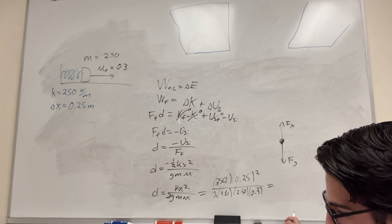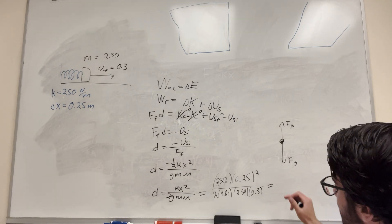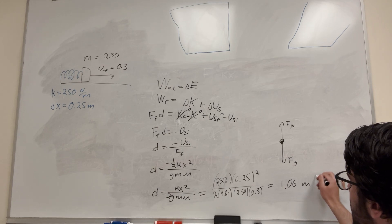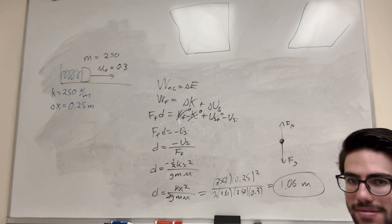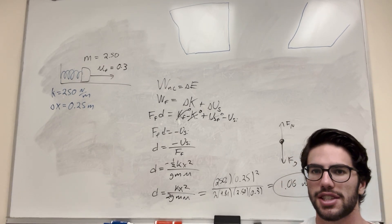And then I'm gonna make sure I did all that. Yeah, I did do that. 2 times 0.3, yep. And then this gives you 1.06 meters, which is a pretty reasonable number. So there you go, that's how you solve this kind of problem.